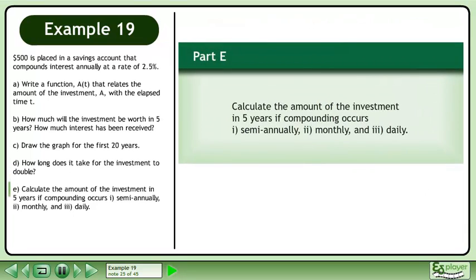Now we'll move on to Part E. Calculate the amount of investment in 5 years if compounding occurs semi-annually, monthly, and daily.